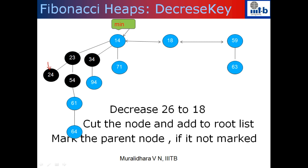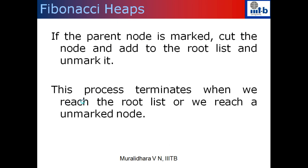The question is: what do I do after I cut the child and go to the parent, if that node is already marked? If the parent node is marked, then cut that node and add it to the root list and unmark it. This process continues until we reach a node which is unmarked — then you mark it and your algorithm stops. Alternatively, if you reach a node in the root list, the algorithm also terminates.